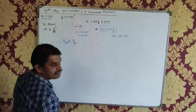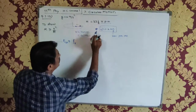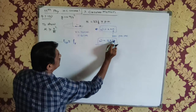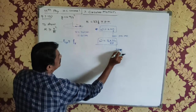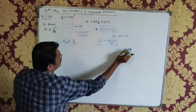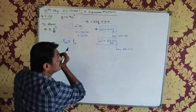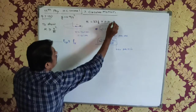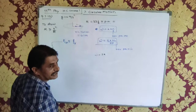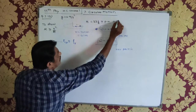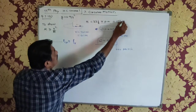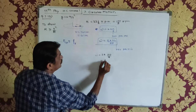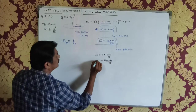We have revolutions per minute, so we divide by 60. N is 33 and one-third revolutions per minute, which equals 100/3. So omega becomes 2π × (100/3) / 60 = 200π/180 = 10π/9. This is our omega value.